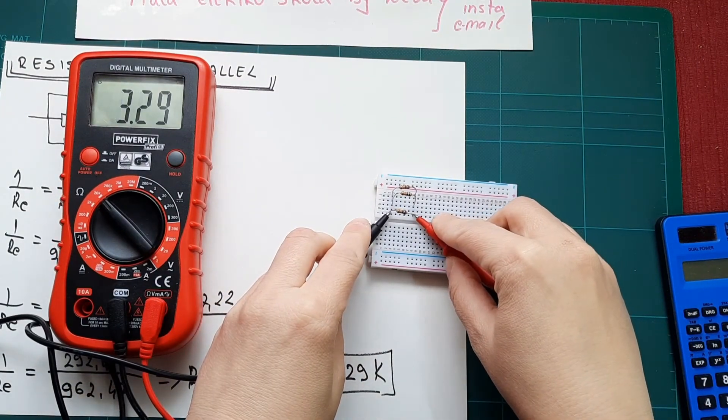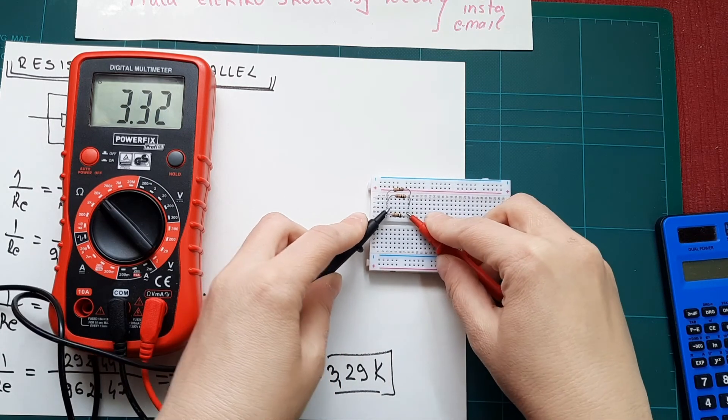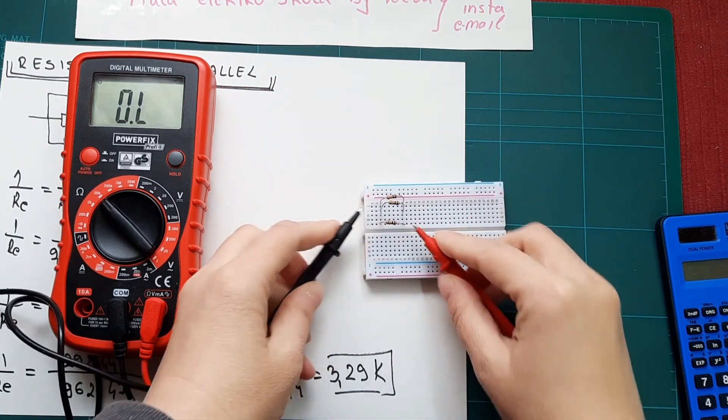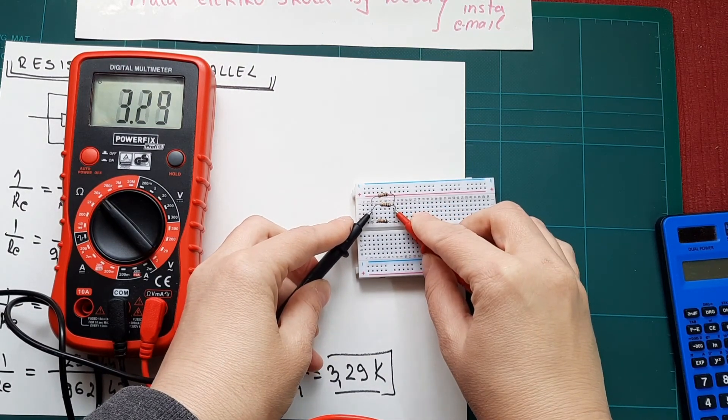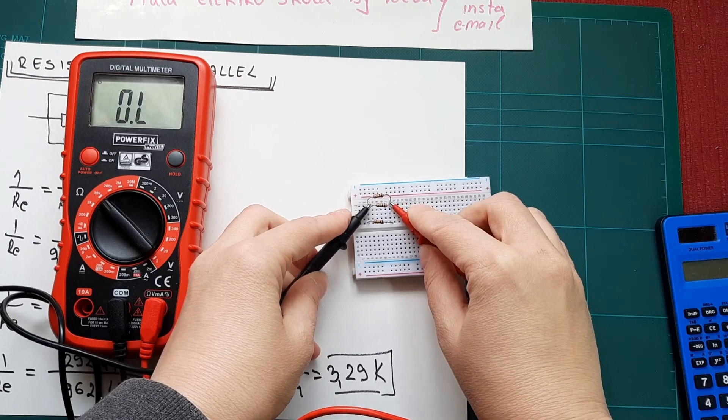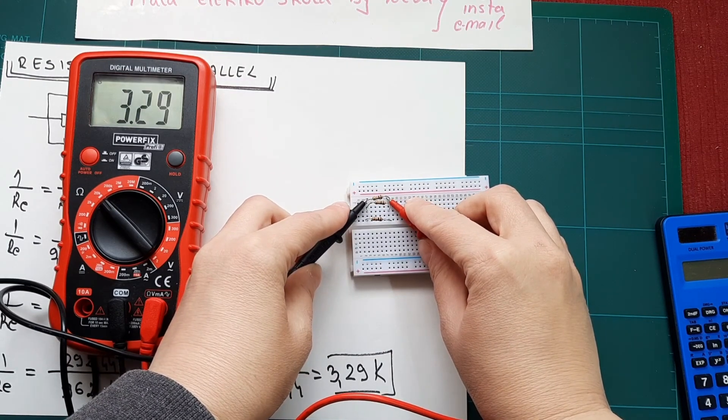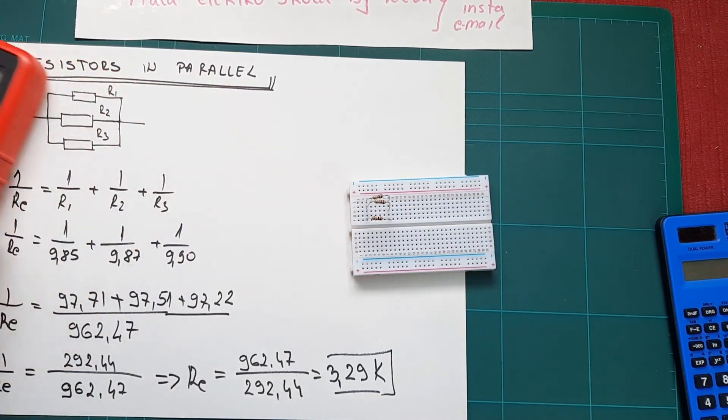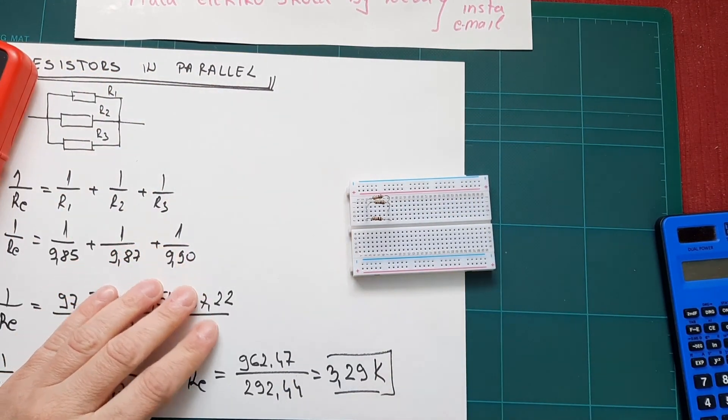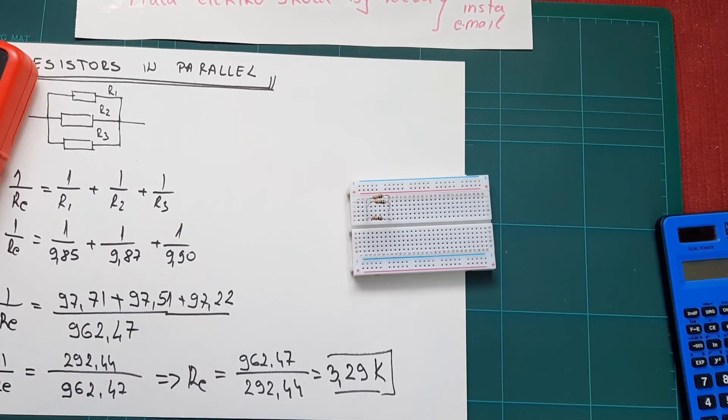It's 3.29, I hope you can see this. If we measure any one of these, we got the same value. That's the parallel resistors in theory and practice. By the end of the video, we will see how that actually looks in schematic.